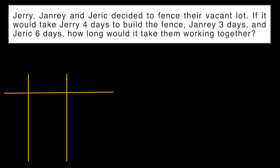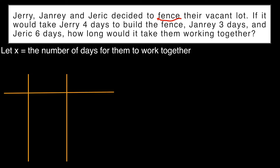So given in this particular problem are the number of days that each can finish the task, and that is to fence the vacant lot. Now we are tasked to solve for the number of days for them to work together so they can finish the task. So that will be our x — the number of days for them to finish the task together. One of my techniques in solving word problems related to work is by creating a table and then identifying the given as well as the unknown.